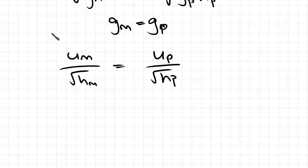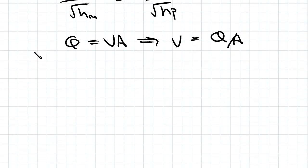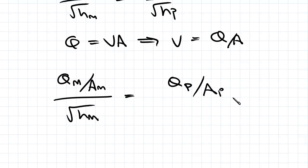Now we know that Q equals VA, or V equals Q over A, so we can substitute that in. And we'll get QM over AM divided by square root of HM equals QP over AP divided by square root of HP.